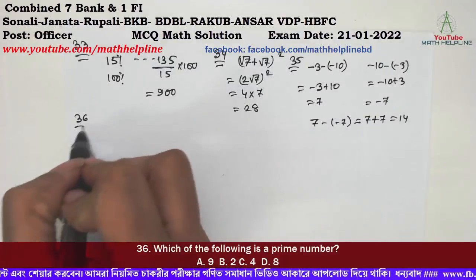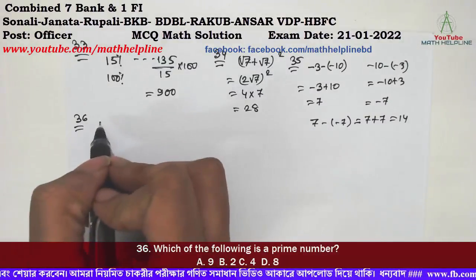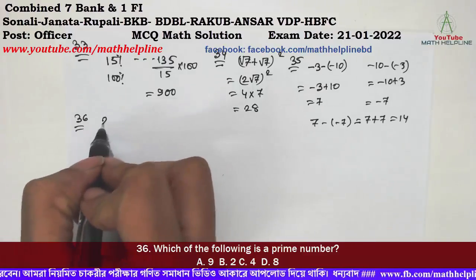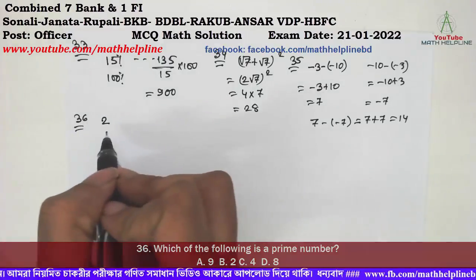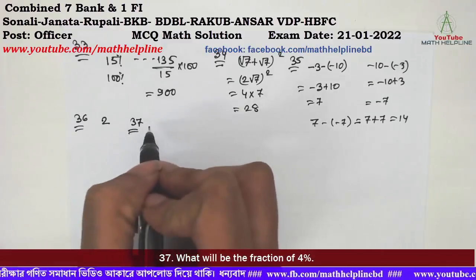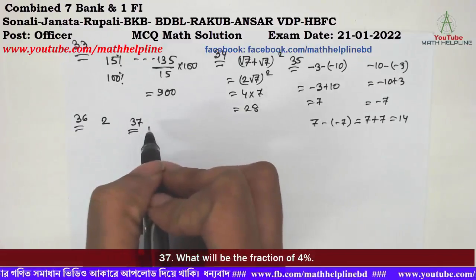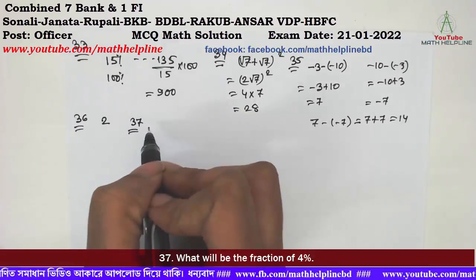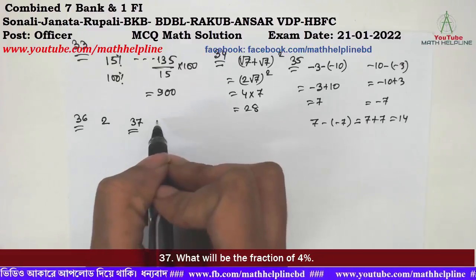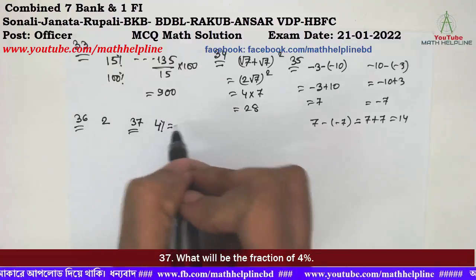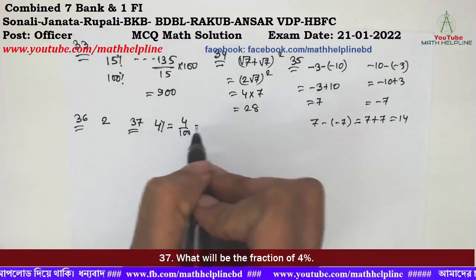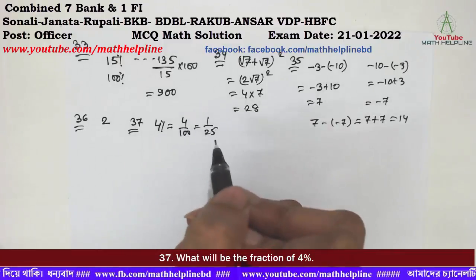Which of the following is a prime number? Answer: 88%. What will be the fraction of 4%? 4% is 4 by 100, which equals 1 by 25. Answer: 80%.